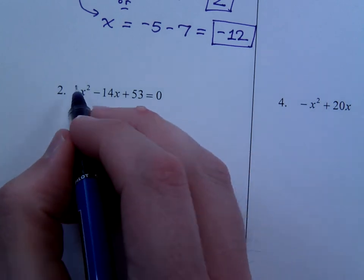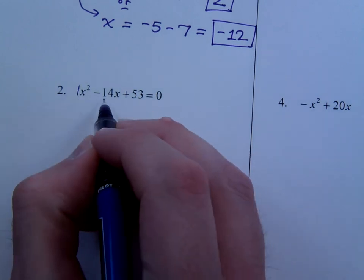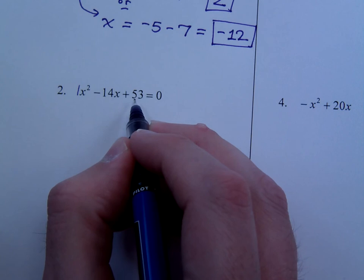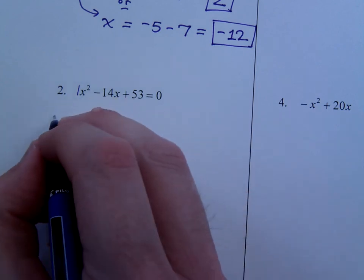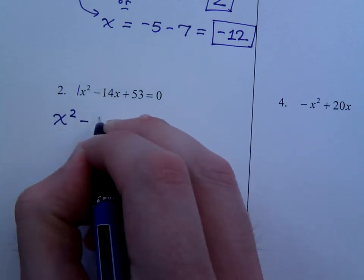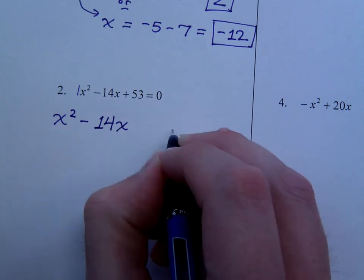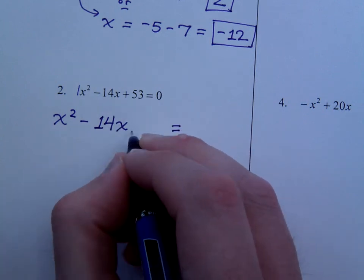So, let's see how we can take those steps and apply it here to number 2. Now, number 2, this is going to be nice for us because this is a 1 and this is even. First thing, you need to move the 53 to the other side. And the reason we move the 53 to the other side is so that we have room to work and we can actually complete the square over here.